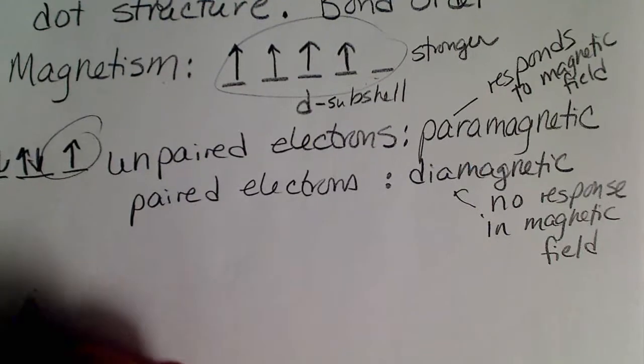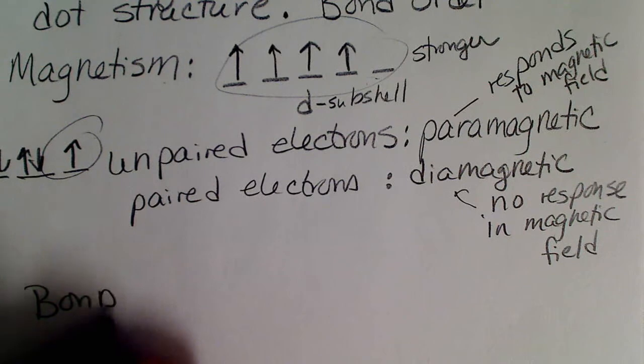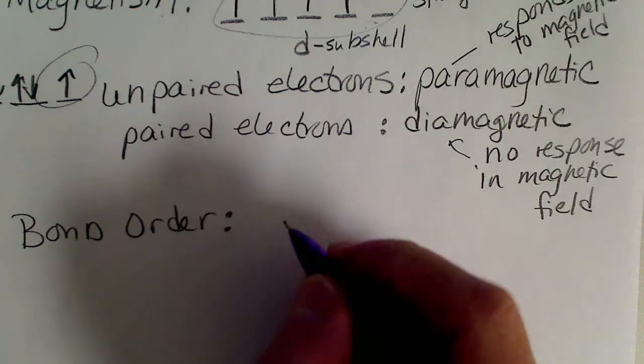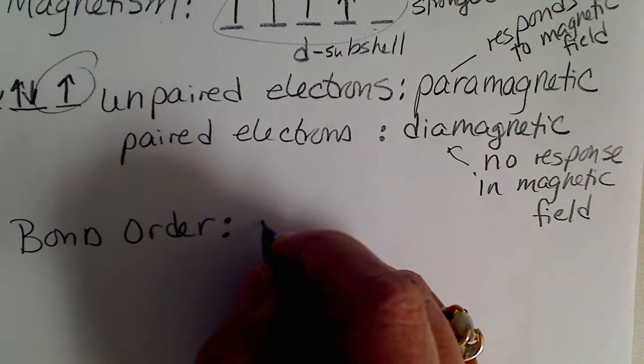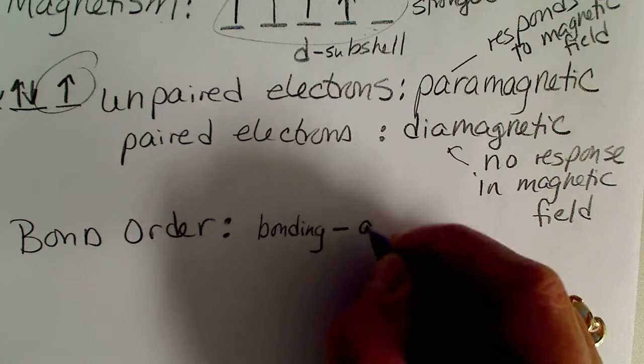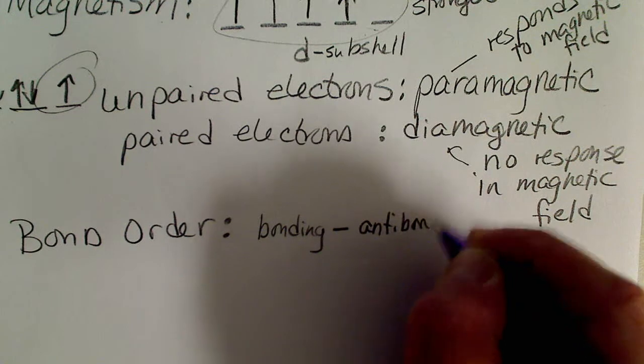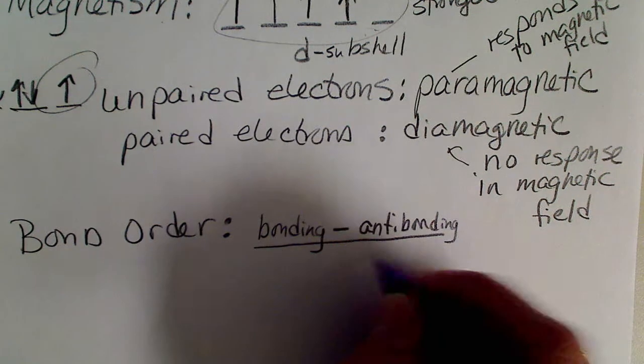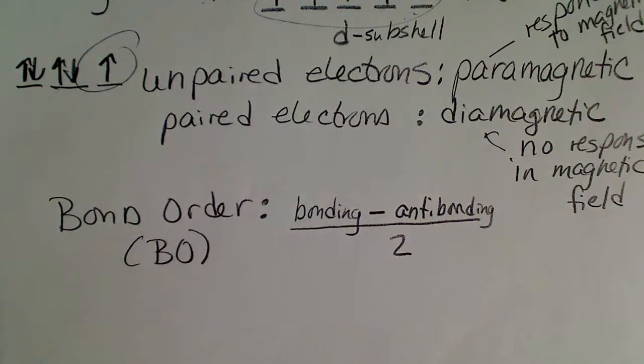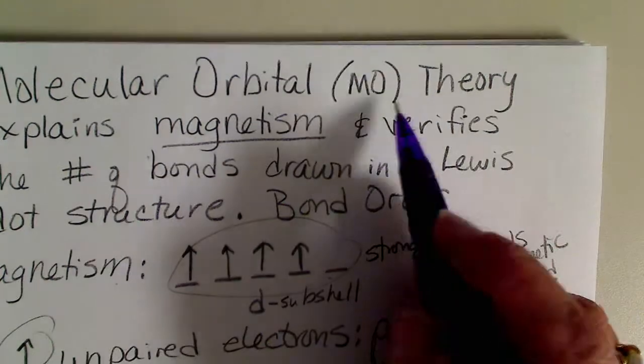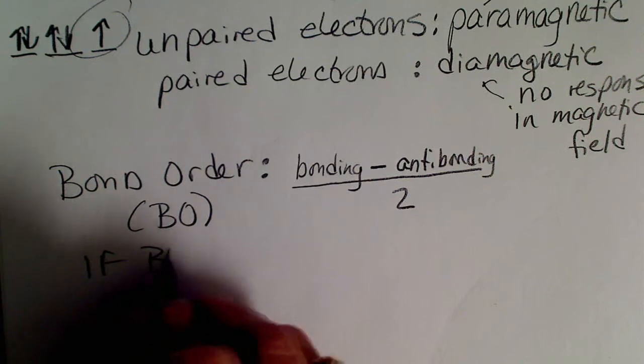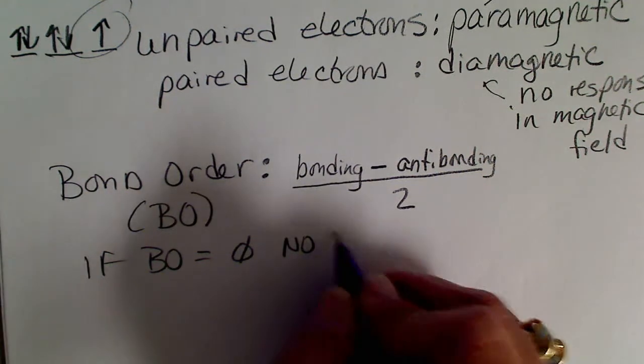The bond order is going to be bonding electrons minus antibonding, divided by two. Bond order I'm going to call BO, and molecular orbital theory I call MO. For bond order, if the bond order equals zero, then there's no bond.